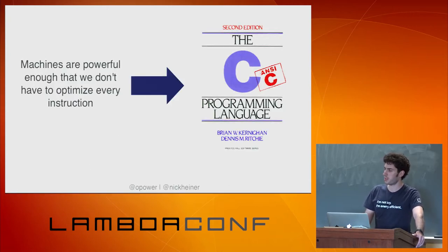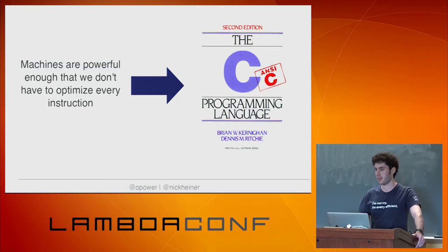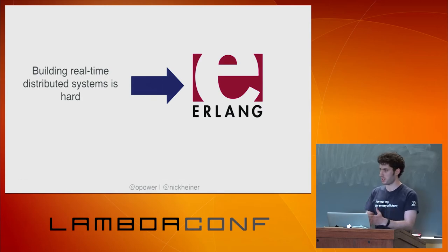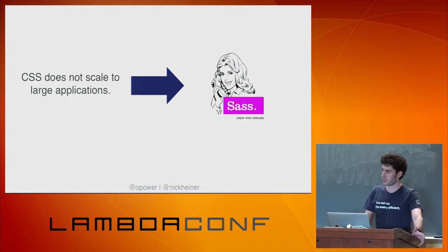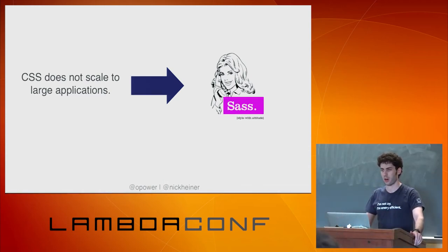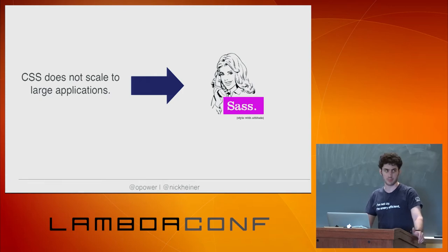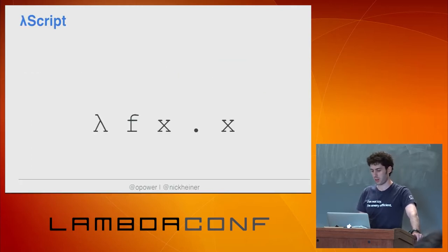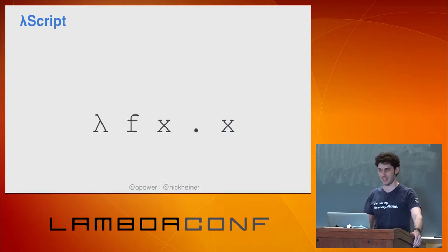It's also just fun and it makes you a better programmer to know how this stuff works under the covers. The big reason that we see new languages is that something about the way that we build programs has changed and existing languages just aren't cutting it anymore. When computers got powerful enough that we didn't need to optimize every instruction by hand, C was invented. When people decided that building real-time distributed systems would be a good idea, Erlang was built to address those problems. CSS was originally designed for a little bit of styling on your static homepage, and now it's controlling the look and feel for massive complicated web applications — so SASS was invented.